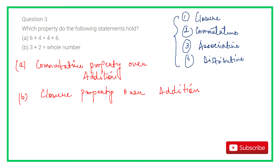These are small questions you can find in one-markers, and you can be asked them in Viva: what is closure property? What is commutative property? Give any example of such a property. So 6 plus 4 equals 4 plus 6 is commutative property. 3 plus 2 is a whole number is closure property over addition.